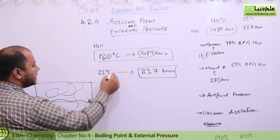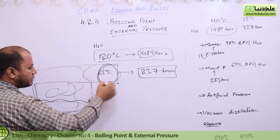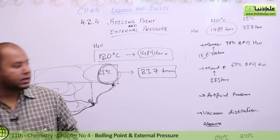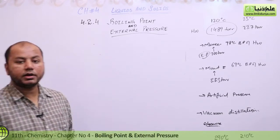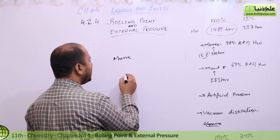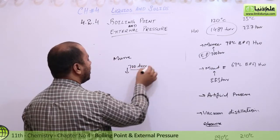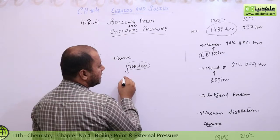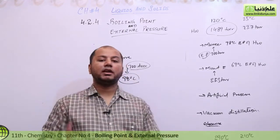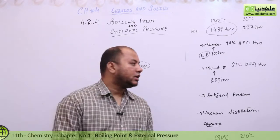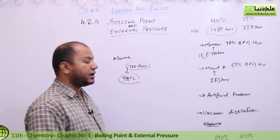But if you go higher up — for example, to Murree — the atmosphere column above you is shorter. So the external pressure at Murree is about 700 torr. At sea level, water boils at 100 degrees Celsius, but at Murree with external pressure of 700 torr, water boils at about 98 degrees Celsius.